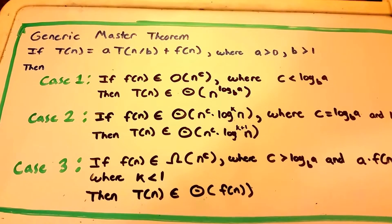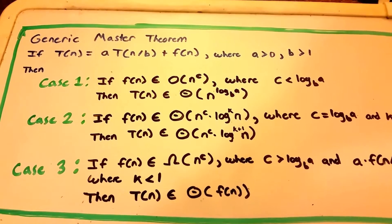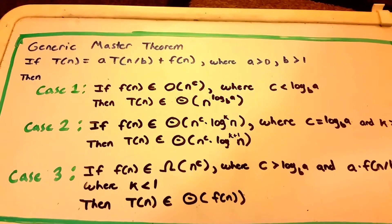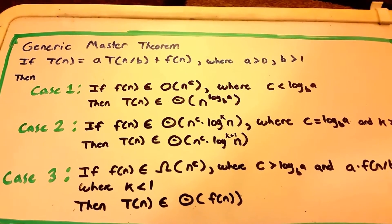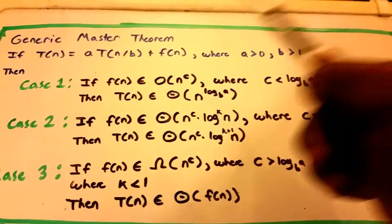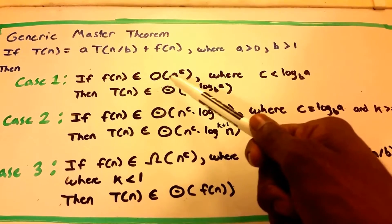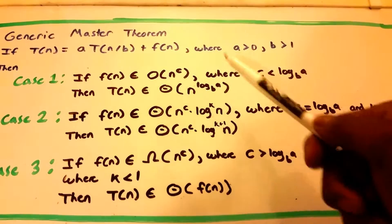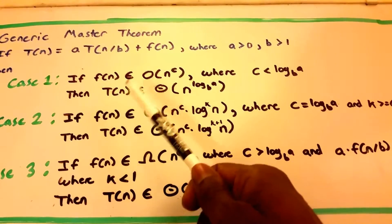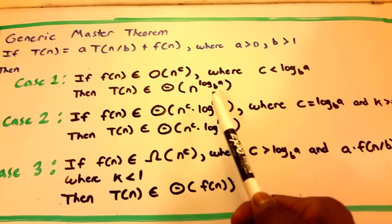Here is the master theorem. It says if T of n is equal to A times T of n divided by B plus some function of n, where A is greater than 0 and B is greater than 1, then we can use one of three cases. Case 1: if the function of n belongs to big O of n to the power of C, where C is less than log base B of A, then T belongs to theta of n to the power of log base B of A.